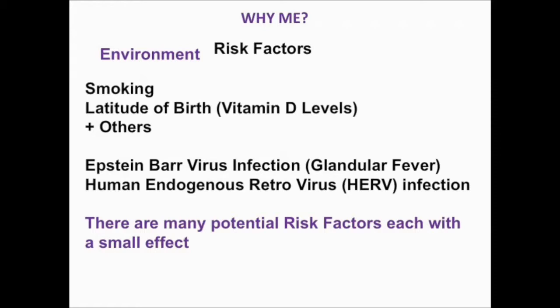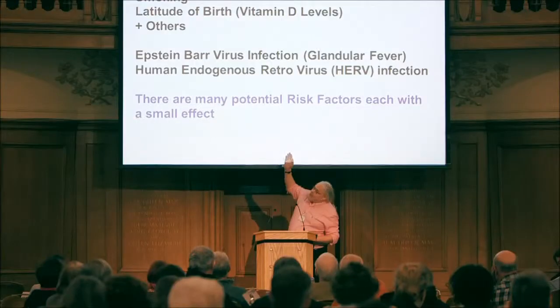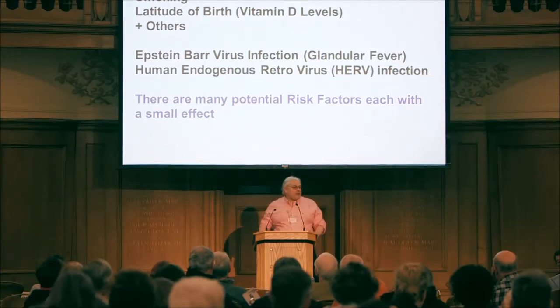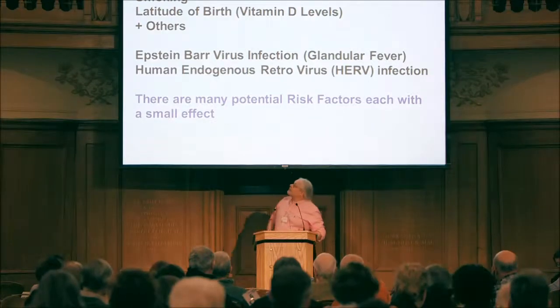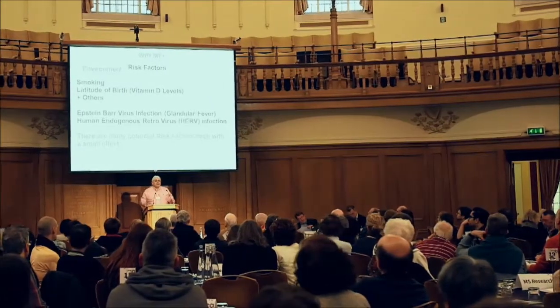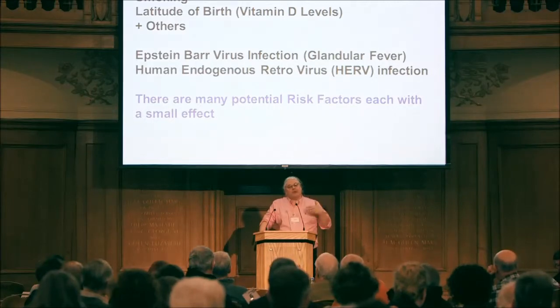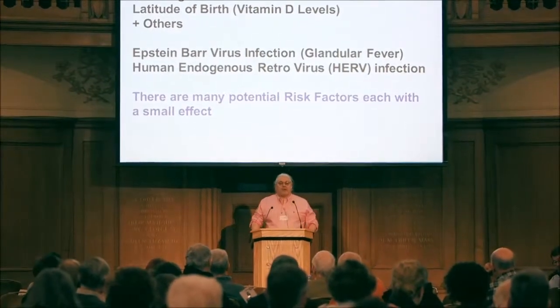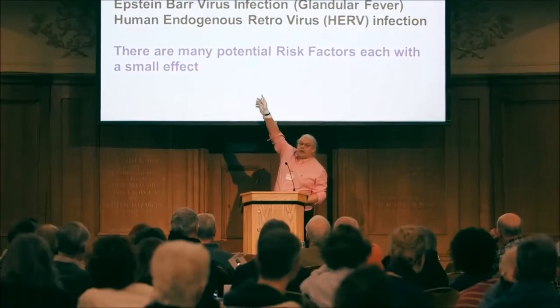There are a number of different risk factors. One thing that appears to associate with MS is Epstein-Barr virus — most people with MS have it, but most people without MS also have it. There is also something called human endogenous retrovirus, which is in our genome and all of us have it, so it could be a very common trigger. Some of those things we can't do much about, but one thing you can do is smoking: make sure your children don't smoke, and that will cut their risk of getting MS by half.